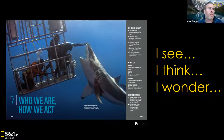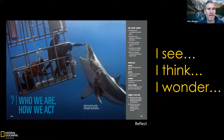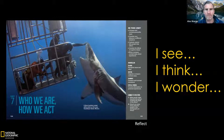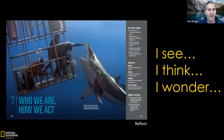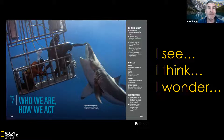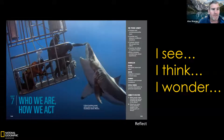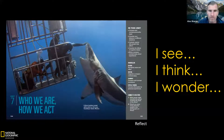After 'I see,' we move to 'I think' — what do I think is happening? Looking at this photo, students share their ideas: 'I think he's feeding the shark,' 'I think they're checking the shark's teeth,' 'I think it's feeding time,' 'I think it's the shark dentist,' 'I think they're trying to film the shark,' 'I think it's a tourist activity.' Loads of great ideas — all involving slightly more higher order thinking skills.